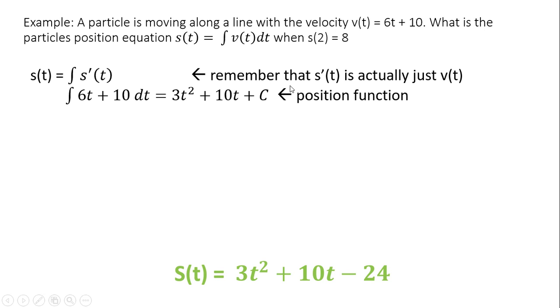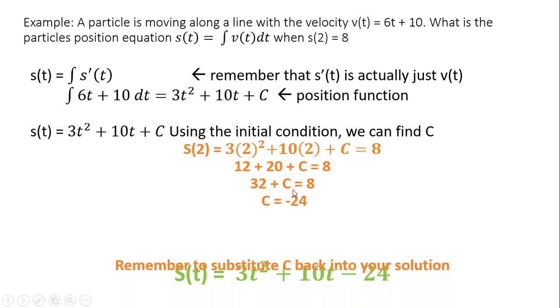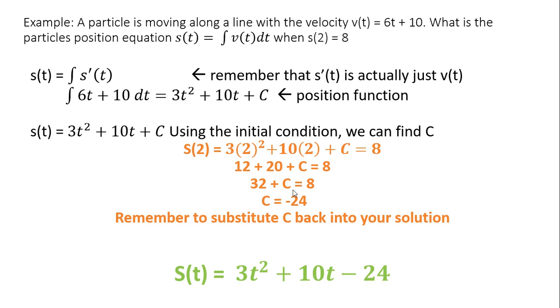Using that initial condition, we find C. I have s(2); I'm plugging that into my equation. Three times two squared—just doing a plain substitution—10 times two. Solve step by step and I get C = -24. Big thing is you have to remember to substitute C back into your solution. Have to, have to, have to. If you don't, then it's wrong. That's something I saw a lot of you guys leaving off the first assignment. It got a little better last assignment, so I want you guys to keep going. Remember to plug your C back into the equation, and now this is your final solution.